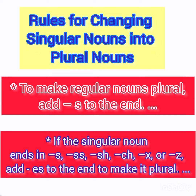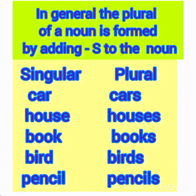First, to make regular nouns plural, add s to the end. Second, if the singular noun ends in s, double s, sh, ch, x, or z, we add es to the end to make it plural.